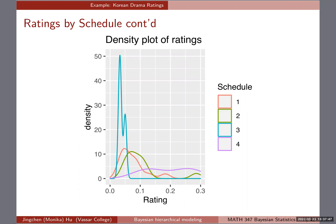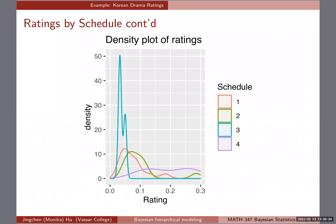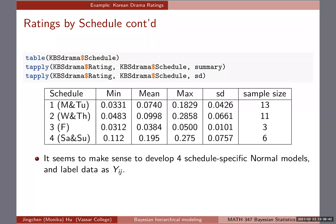I'd like to take this chance to put you in breakout rooms to chat with your neighbors. This is slide number seven, so once you're in the breakout room you can reference that. The question for you is: looking at this density plot of rating by schedule, as well as the summary table showing minimum, maximum, mean, standard deviation, and sample size — what are your takeaways at first glance? What is interesting or jumping out?